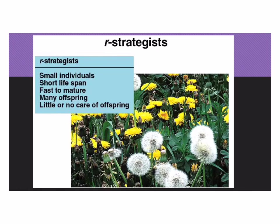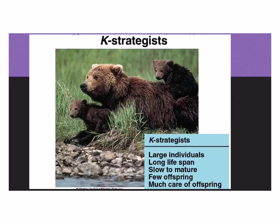To summarize: R-strategists tend to be small individuals with short lifespans. They mature quickly, have lots of offspring, and have little to no care of their offspring. K-strategists usually are larger, have a longer lifespan, mature more slowly, have fewer offspring, and take good care of them.